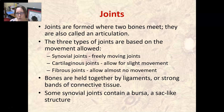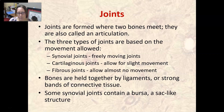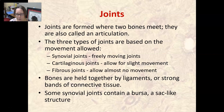Joints are formed where two bones meet and are also called articulations. The three types of joints are based on movement allowed. Synovial joints are freely moving joints — fingers, arms, and legs — and contain synovial fluid. Cartilaginous joints allow slight movement, such as in the spinal column. Fibrous joints allow almost no movement — the sutures of the skull are fibrous joints. Bones are held together by ligaments, and some synovial joints contain a bursa, which is a sac-like structure.